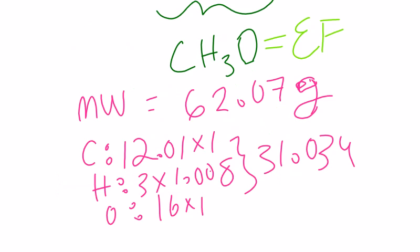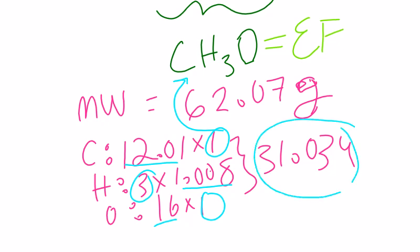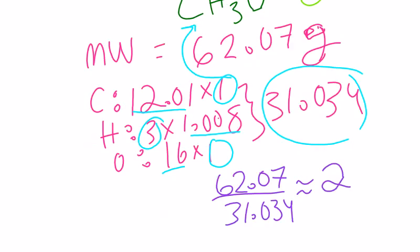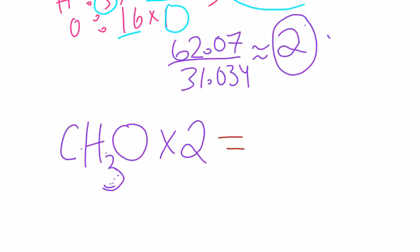We calculate it by adding up the mass of each element as defined in the periodic table, while also multiplying by the amount of atoms there are, which is defined in the equation above. Therefore, getting a molecular weight of 31.034. Now we divide 62.07 by 31.034 to get around 2.